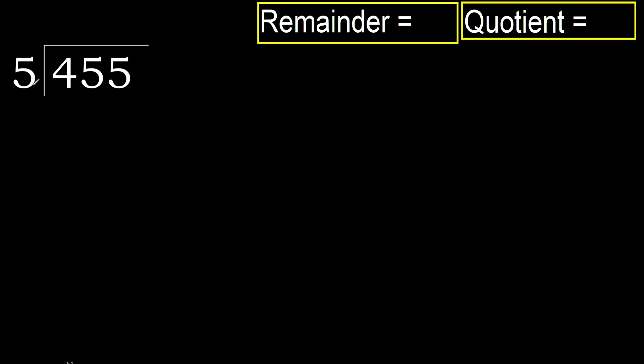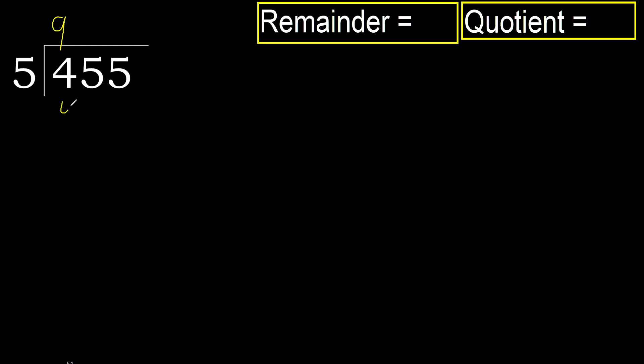455 divided by 5. 4 is less, therefore next. 45 is not less, therefore with 45: 5 multiplied by which number is nearest to 45 but not greater? 5 multiplied by 9 — 45 is not greater.